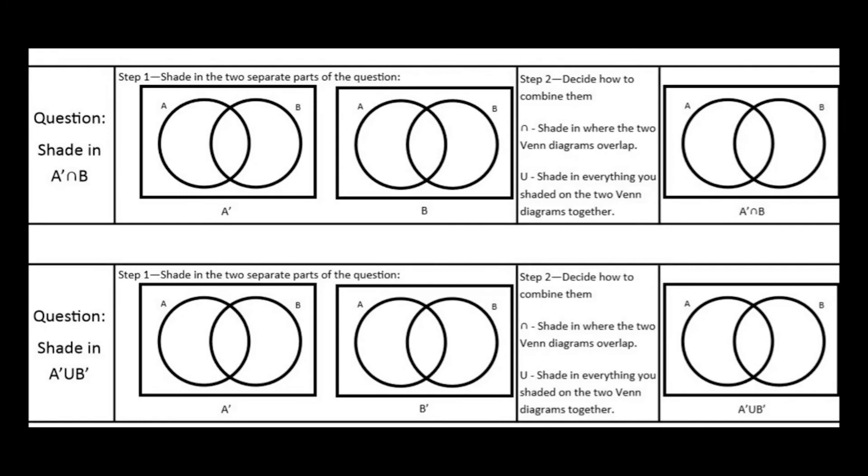Okay, so here we want to make sure that we can shade in regions correctly using set notation, and just a technique or strategy to help you shade in the correct regions. If we were asked to shade in not A intersection B, we want to think of not A and B as separate individual Venn diagrams. They are individual sets and then we'll see how to combine them afterwards.